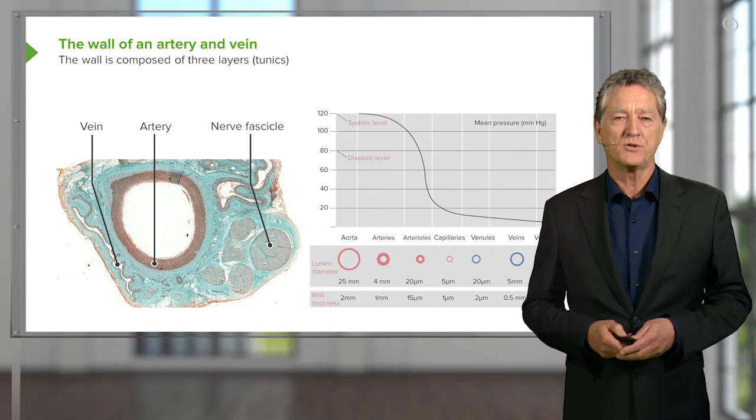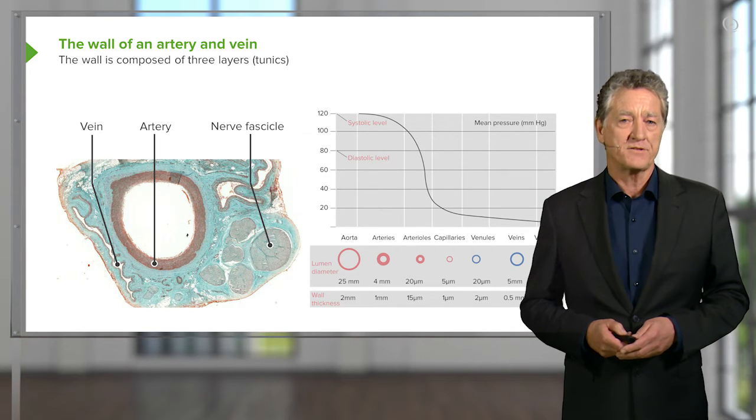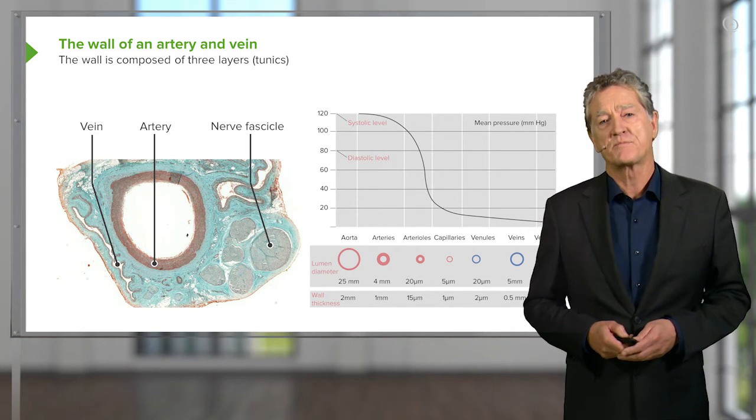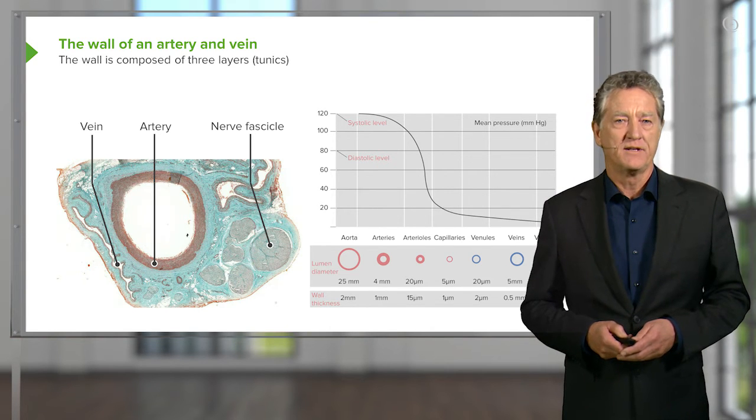In this section, there is also a section through a nerve fascicle. This section is taken through perhaps part of the limb of the body. And you're looking at a fairly large artery, a fairly large vein, and a nerve bundle.